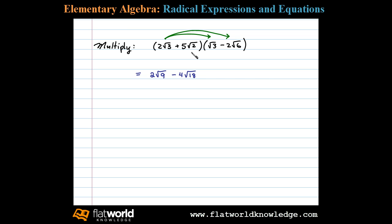Next we distribute five square root of two. Five square root of two times square root of three leaves us with plus five square root of six. Five square root of two times negative two square root of six leaves us with minus ten square root of twelve.